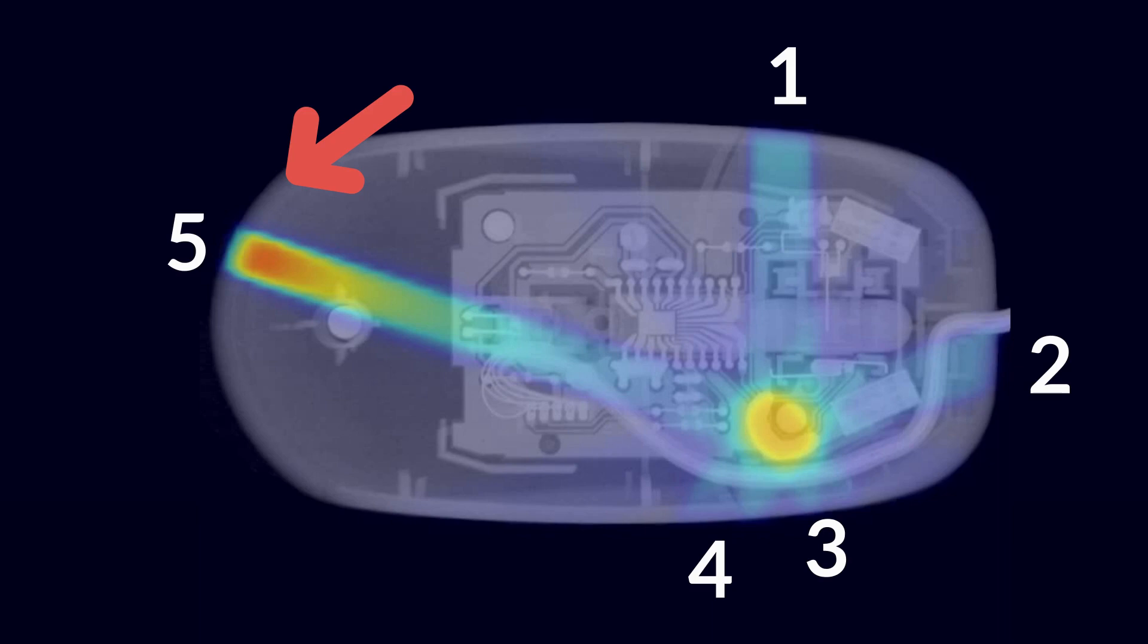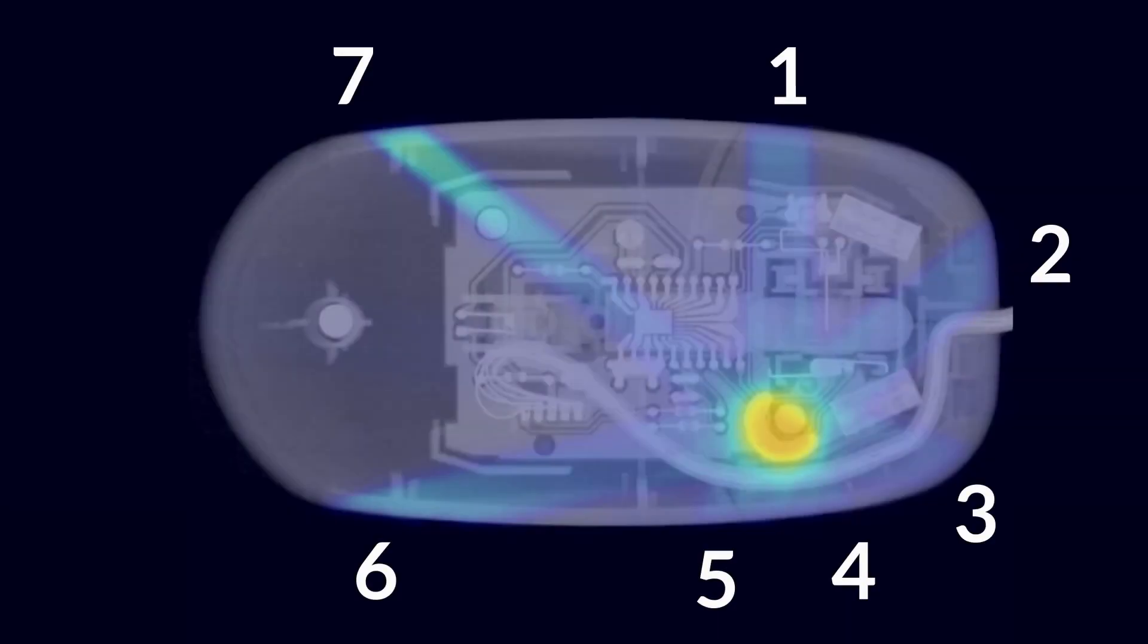But if we use seven beams, no individual beam needs to be very powerful, because all seven converge, or come together, on the same spot. They're still doing the same job as one very powerful beam, but we've reduced the healthy tissue damage by a large amount.